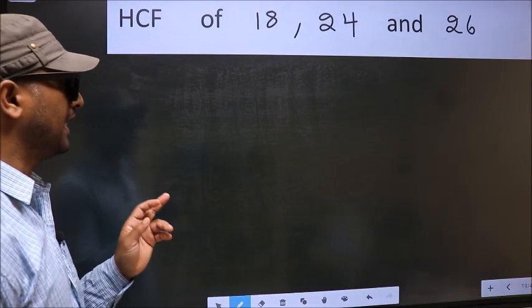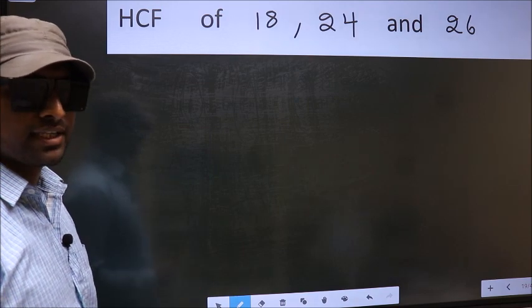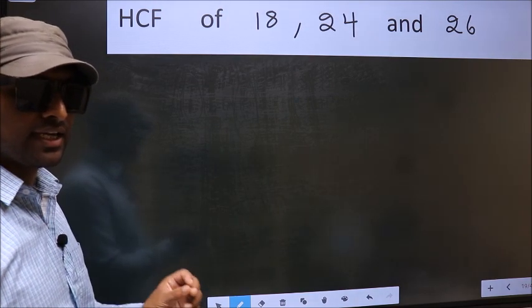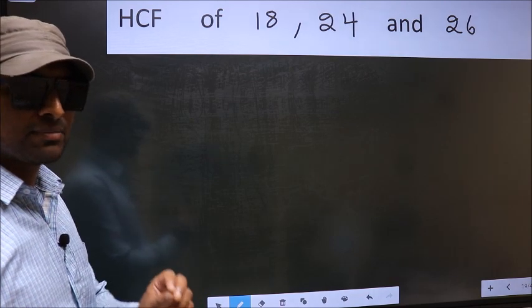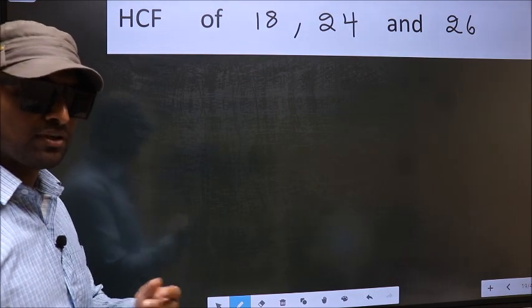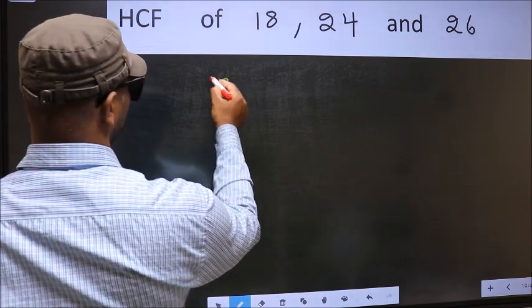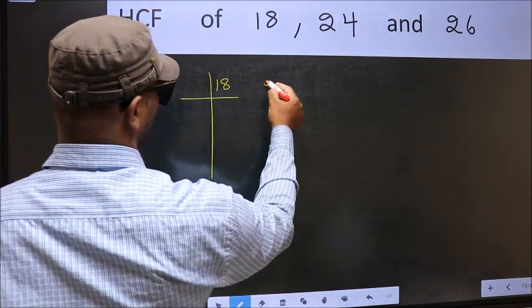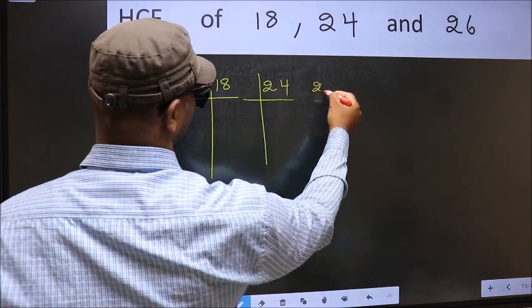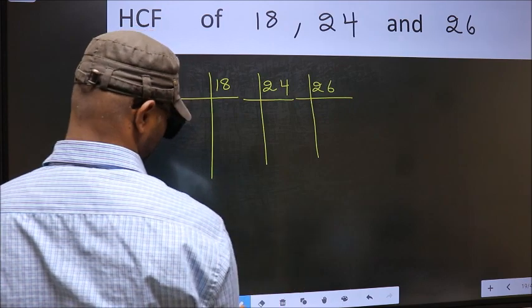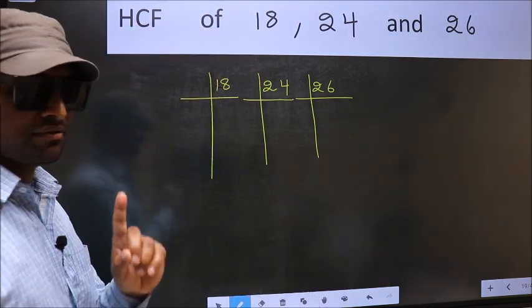HCF of 18, 24 and 26. To find the HCF, we should do the prime factorization of each number separately. What I mean is 18, 24, 26. This is your step 1.